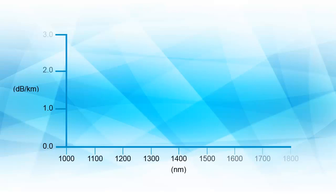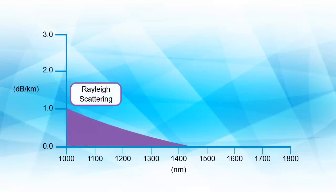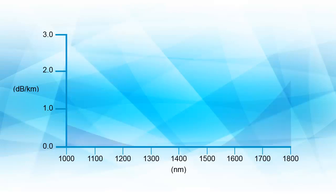Four factors contribute to signal attenuation in a glass fiber. Scattering is the directional and time variation of emitted light caused by collisions of molecules in the fiber with photons in the light being transmitted. Its effect is most prevalent at the shorter wavelengths in the optical spectrum.